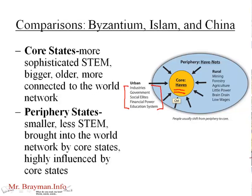The periphery states are more focused on natural resource extraction. The natural resources come out of the periphery states, and then the core states send back things that require manufacturing, knowledge, and sophistication. This tends to make the core states wealthier and the periphery states poorer, and it just becomes this vicious cycle.